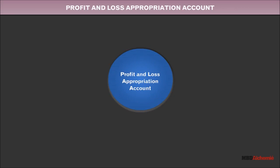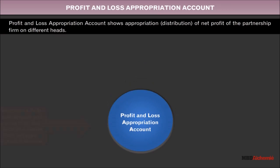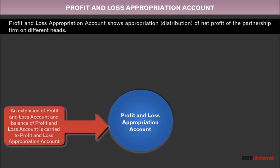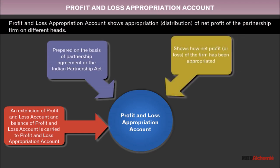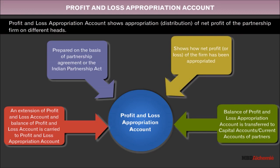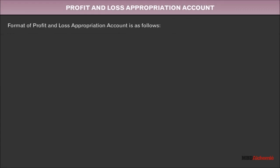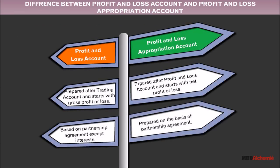Profit and loss appropriation account shows appropriation of net profit of the partnership firm on different heads. Its features are: it is an extension of the profit and loss account; the balance of the profit and loss account is carried to the profit and loss appropriation account; it is prepared on the basis of the partnership agreement or the Indian Partnership Act; it shows how net profit of the firm has been appropriated; and the balance is transferred to capital accounts or current accounts of partners. The format and difference between profit and loss account and profit and loss appropriation account are shown.